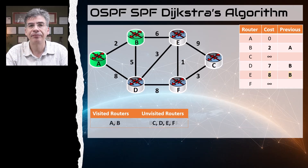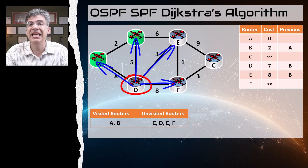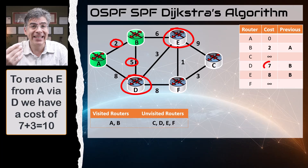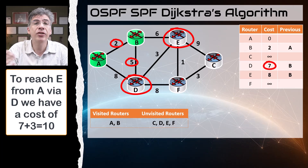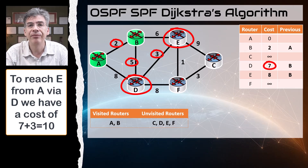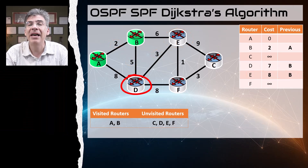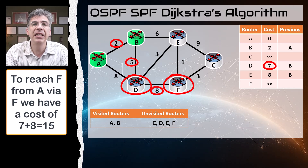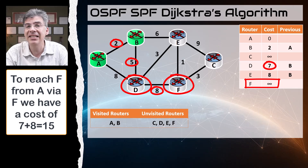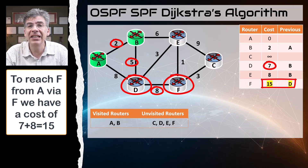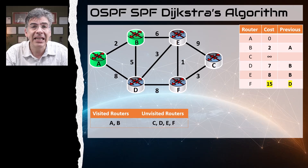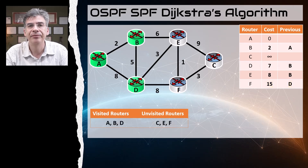Next we look at router D. D has links to routers A, B, E, and F, but A and B are already visited so we ignore them. From D to E, the cost is seven plus three, totaling ten. Looking at the table, E already has a cost of eight via B, which is smaller, so we don't change that. Then we look at the path to F: seven plus eight is fifteen. The path to F is currently infinity, and fifteen is less than infinity, so we update the table with fifteen and put D in the previous router column. Router D now becomes a visited node.